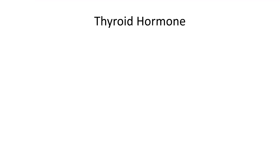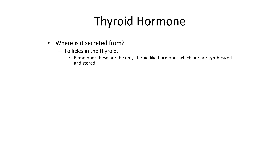Let's talk about the thyroid gland. Thyroid hormone is secreted from the follicles of the thyroid. Remember that thyroid hormone is a steroid-like hormone, however it's unique in the sense that it kind of acts as a protein hormone — it is pre-synthesized and stored.